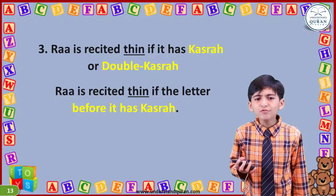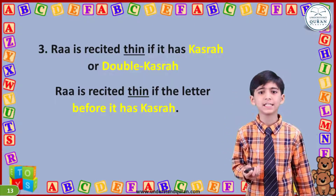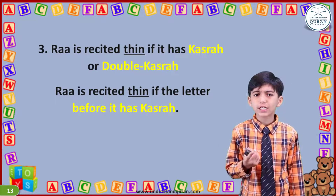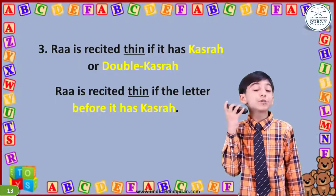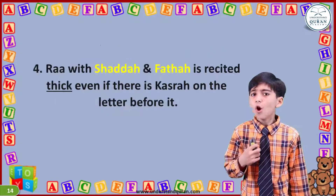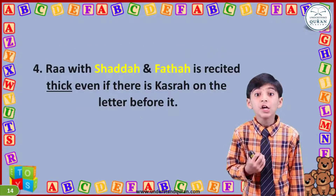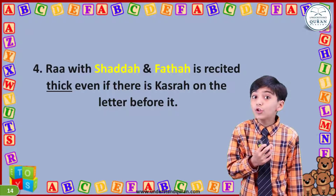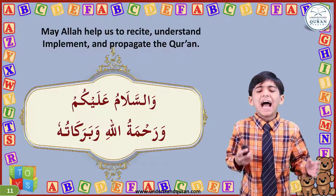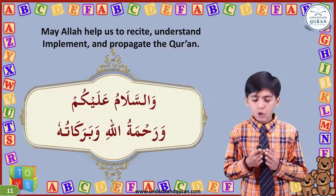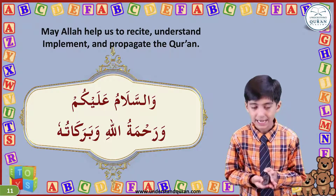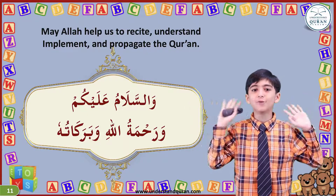So we have just learned two rules in this lesson. The first rule: if Ra has kasra or double kasra on it, or if it is preceded by a letter with kasra, then it must be recited thin. However, if Ra has shada and fatha on it, even though the letter before it has kasra, we must recite it thick. May Allah help us to recite, understand, implement and propagate this Quran. Wassalamualaikum warahmatullahi wabarakatuh.